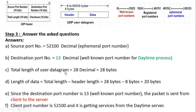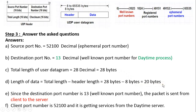The total length of the user datagram is 28 decimal, equal to 28 bytes. That means the length of the header plus the data is 28 bytes. We know that the UDP header has a fixed size of 8 bytes. So the length of the data can be calculated as total length minus header length: 28 bytes minus 8 bytes equals 20 bytes. Therefore, the length of data carried in the UDP datagram is 20 bytes.